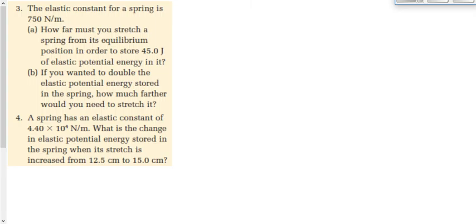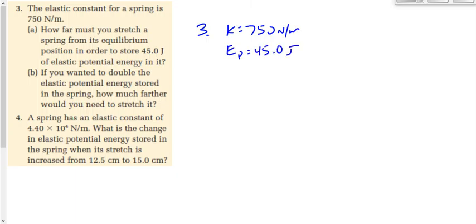Let's look at question 3 on page 301. It says: how far must you stretch a spring from its equilibrium position to store 45 joules of elastic potential energy? Given: k equals 750 newtons per meter, and Ep equals 45.0 joules. We want to find x. Which equation fits those givens best — F equals kx, or Ep equals one-half kx squared?